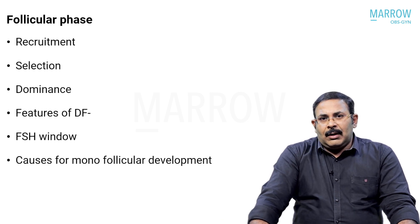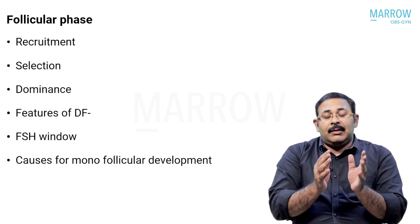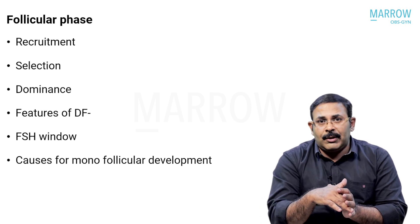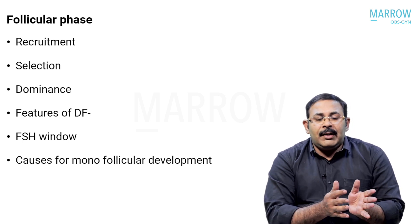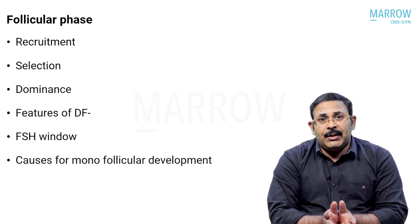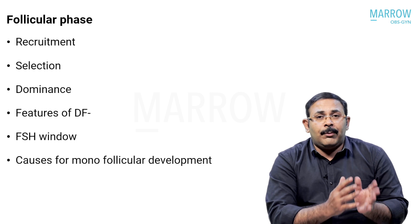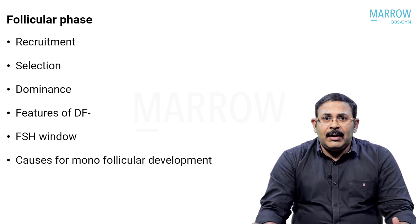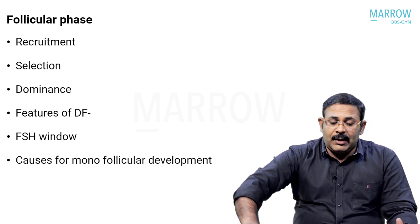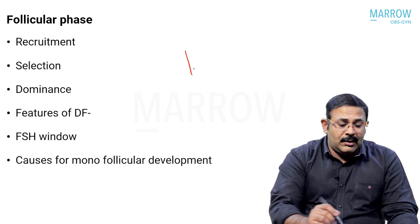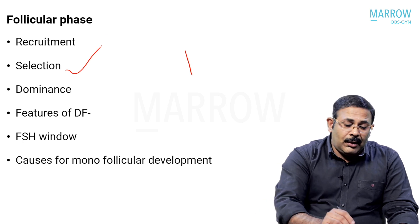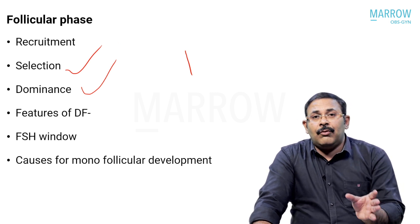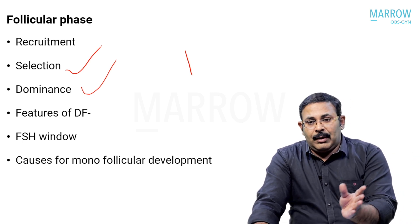A group of primordial follicles will be developing, and once reaching a certain stage, a hormone called follicle-stimulating hormone or FSH can act on the follicle. Recruitment is defined as the process by which a group of follicles - a fixed fraction of primordial follicles - undergo certain changes to be ready to be acted upon by FSH. Once follicles are recruited, then among the cohort only one follicle is going to be selected, and this follicle will become the dominant follicle.